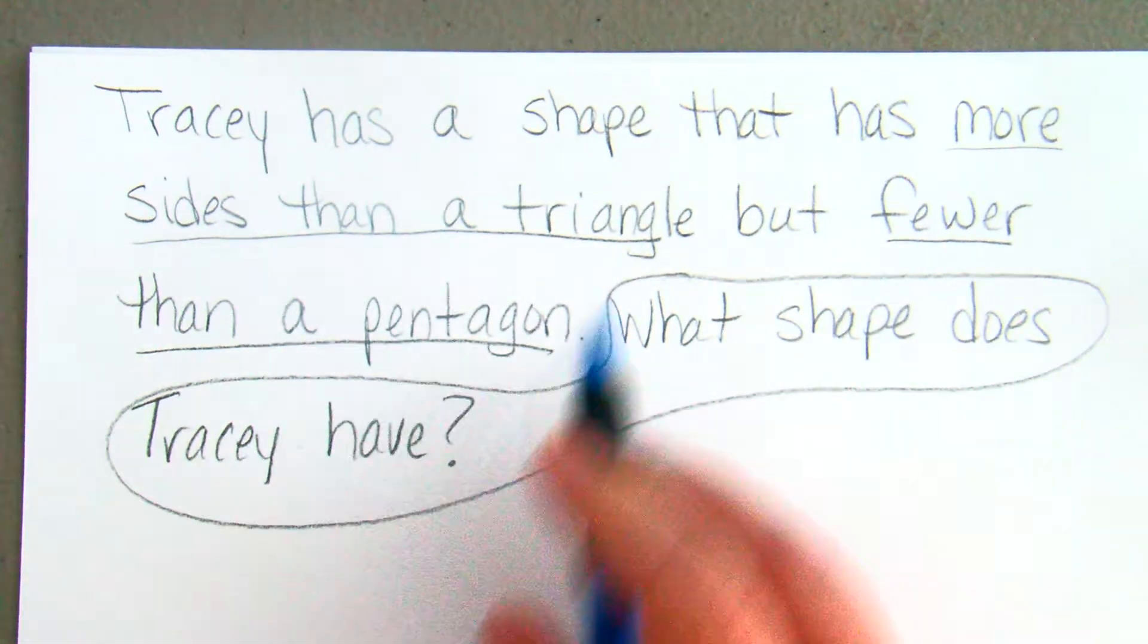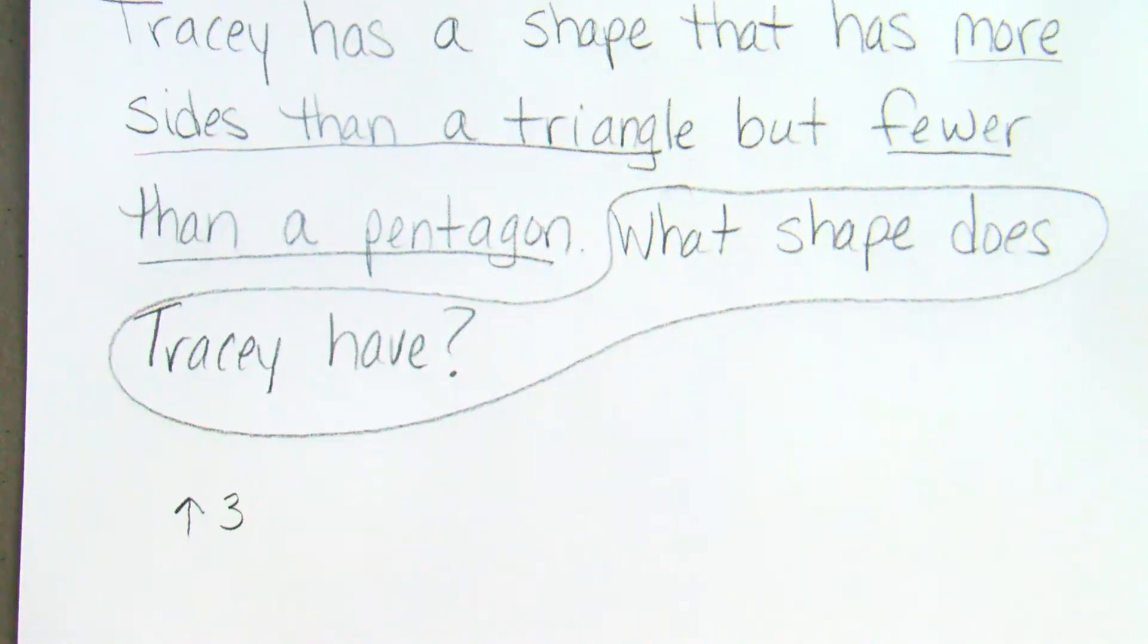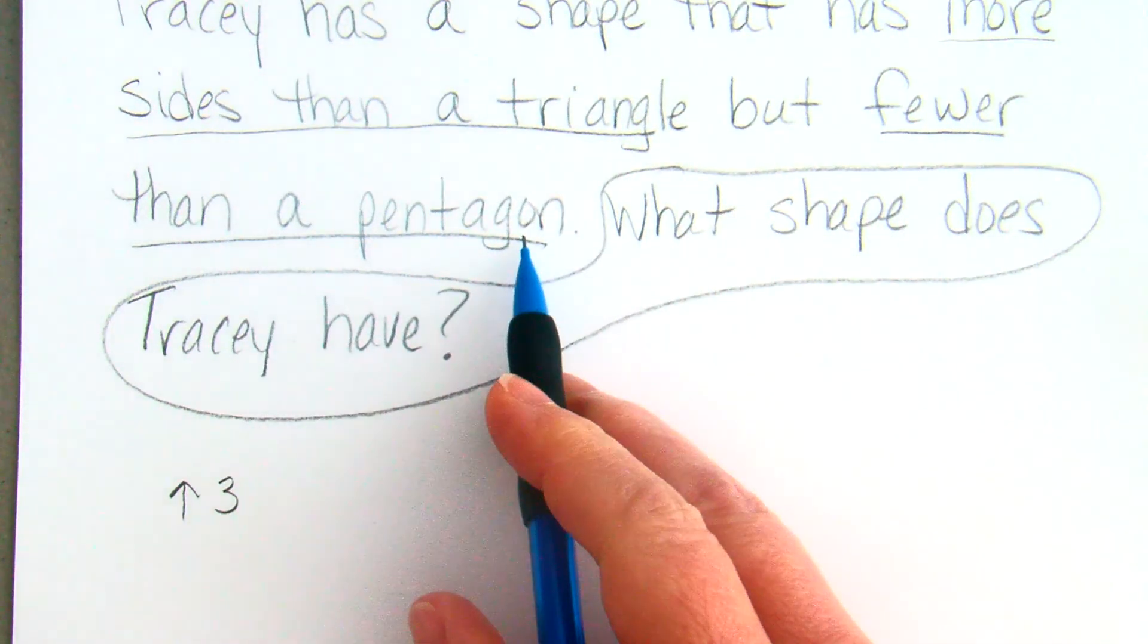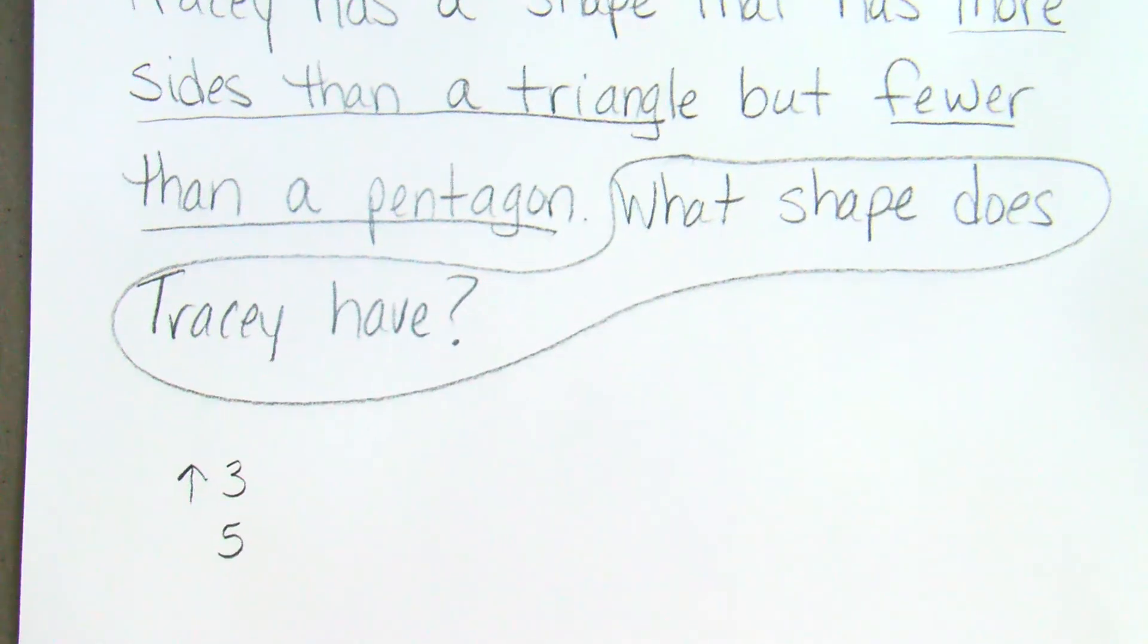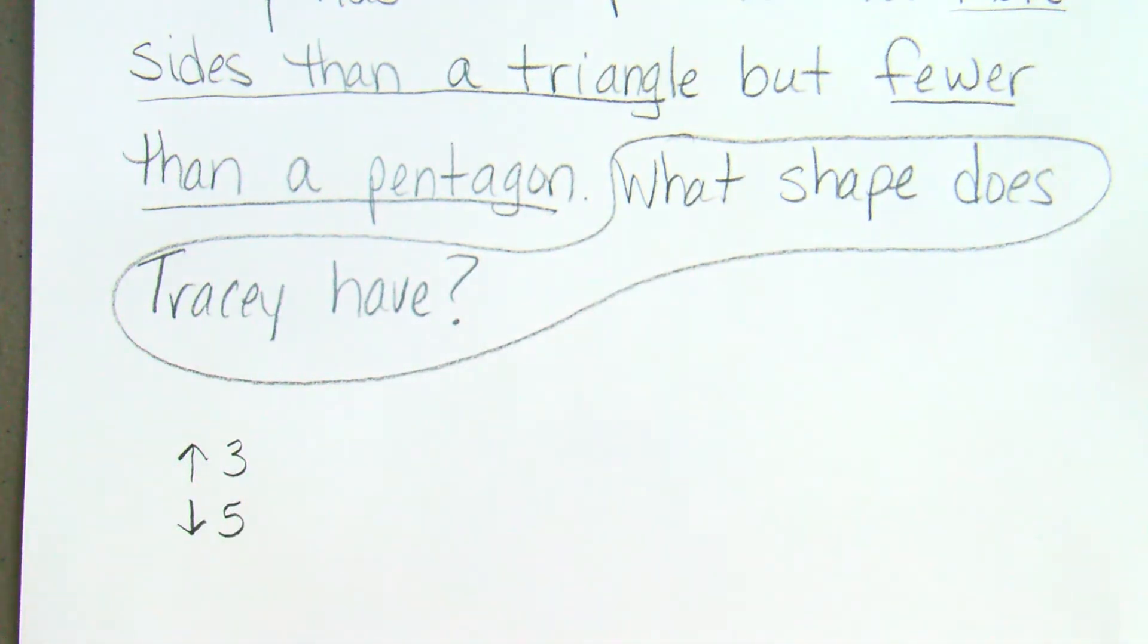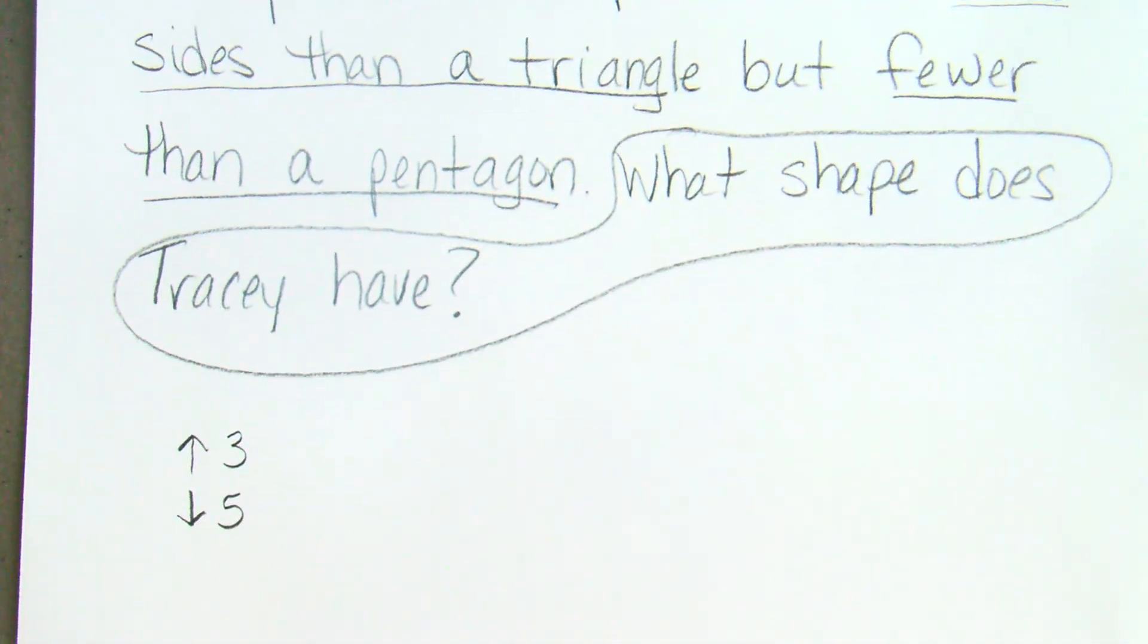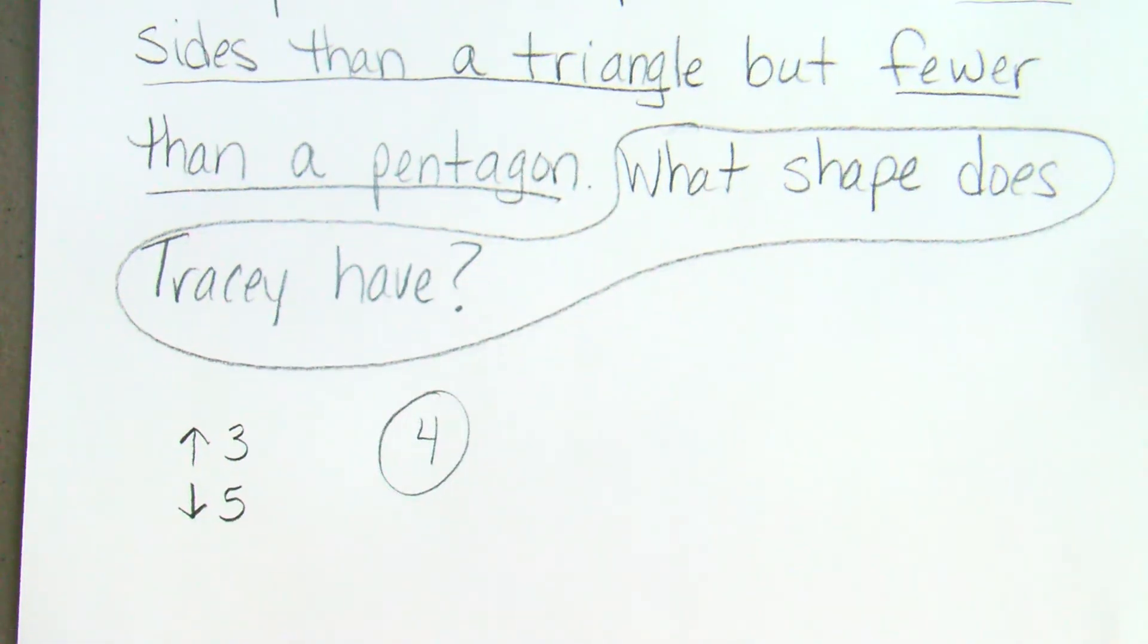I know a triangle has three sides. So it has more than three sides. I know a pentagon has five sides, and it has less than five sides. So if it's more than three and less than five, my shape is going to have four sides.